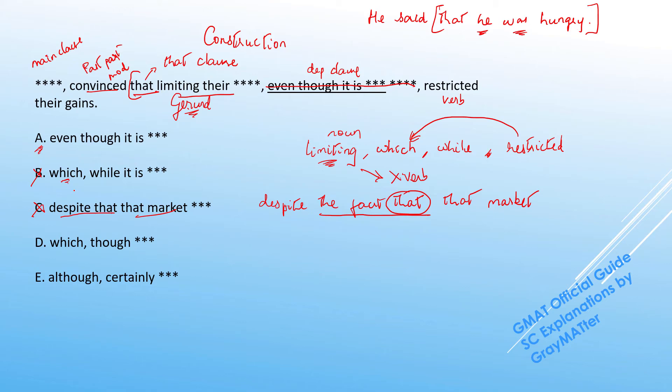Now if you notice in D, we have a very similar construction to that of B. It starts with which, which once again initiates the relative clause, and we have this clause starting with though, but this is between commas. So if you read around this, the which restricted becomes a relative clause. So once again you have a condition in which the gerund limiting does not have a main verb. So D goes off.